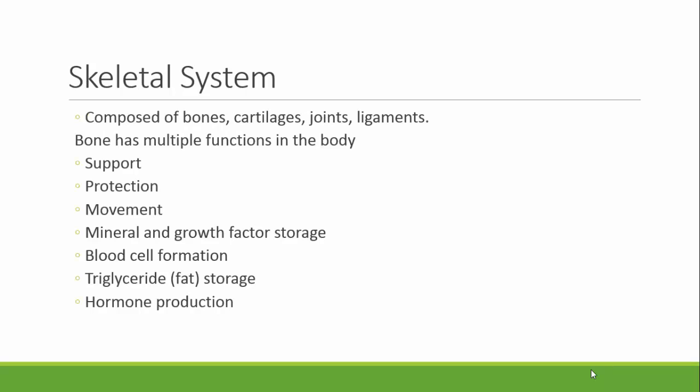The skeletal system is composed of bones, cartilages, joints, and ligaments. Bones have multiple functions in the body: to support the frame of the body, protect vital organs — for example, your skull protects your brain — facilitate movement, as your muscles attach to the bone to create levers, mineral and growth factor storage, blood cell formation, triglyceride storage (that is fat storage), and hormone production.